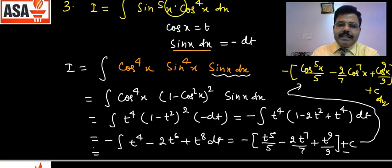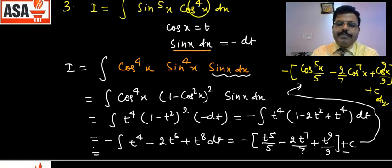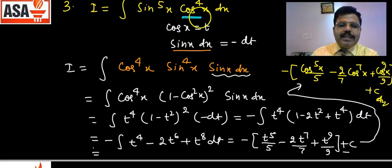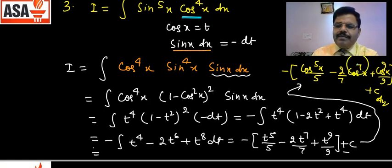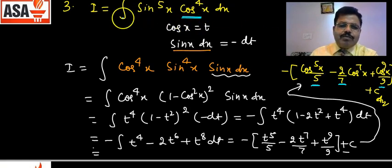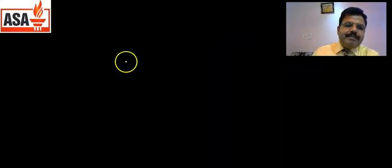Shortcut pattern: इस function को देखिए — 5 + 4 = 9 एक बार आएगा, फिर 2 का difference। यानि power 9, 7, 5 — तीन terms। cos को substitute किया तो answer cos में आएगा। Power 9 होगा 9 से divide, power 7 होगा 7 से divide, power 5 होगा 5 से divide। बीच वाले का coefficient 2 होगा। cos put कर रहे हैं तो minus sign बाहर आएगा।